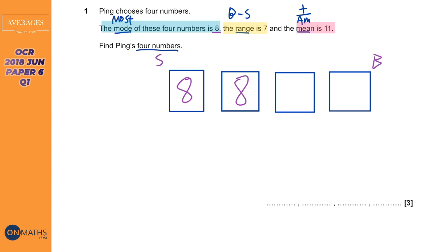It says the range is seven so following my hypothesis that eight is the smallest number, the range is the biggest takeaway the smallest. So we know that the biggest number has to be seven more than the smallest number and seven plus eight is fifteen.